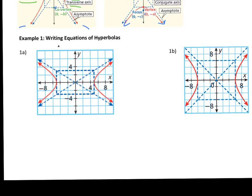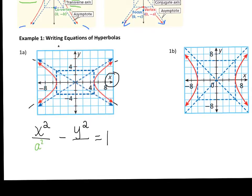Let's write an equation in standard form for each of these graphs. The arrows point to the right and to the left, so it's horizontal and x squared is going to come first. We'll have a minus sign, then y squared, and it all equals 1. Our job is just to figure out what's a squared and what's b squared.